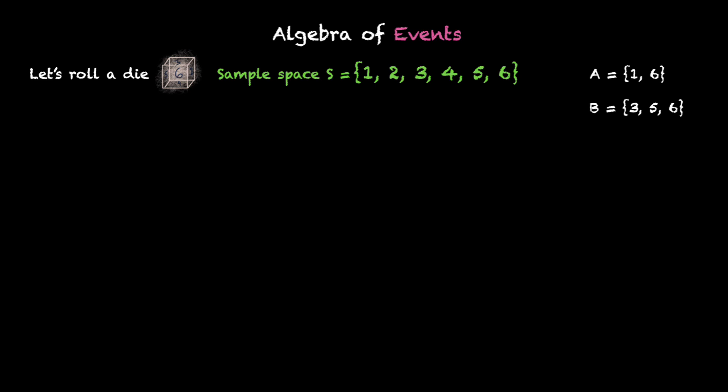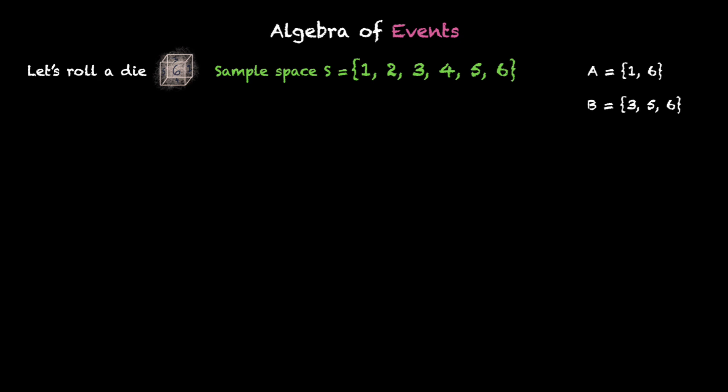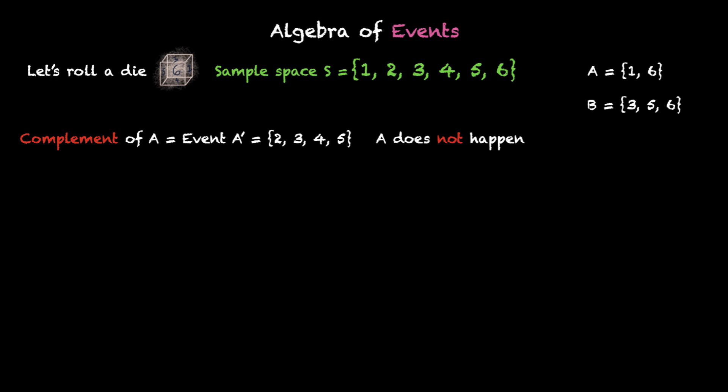This means that if you get 1, you can say that event A has occurred. If you get 5, you can say that event B has occurred. Now when will A not occur? This is called the complement of A, or event A'. This will happen when you get 2, 3, 4 or 5. So what will be the complement of B? That's event B', and that will occur when you get 1, 2 or 4 — basically you get rid of all elements in B and pick whatever's left from the sample space.